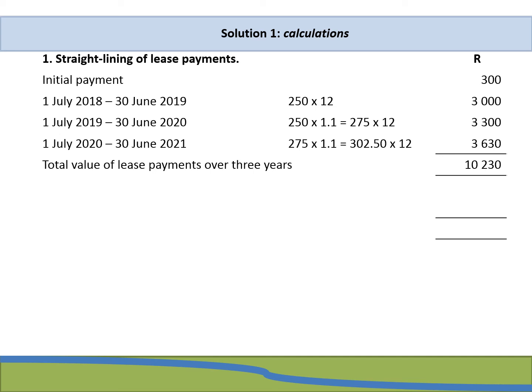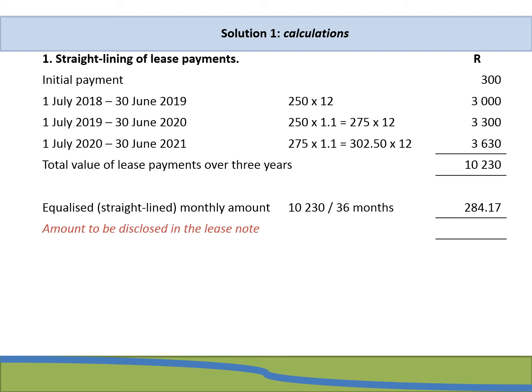We now need to straight-line that amount over the lease term. Dividing the total of 10,230 by 36 months gives a monthly straight-line amount of 284 Rand. We are not done yet, as we need to disclose this amount in the notes. The lease was entered into on 1 July 2018 and the financial year ended 31 December 2018, so we multiply by six months. However, the actual amount paid may not equal the equalized amount, resulting in either an overpayment or underpayment compared to the statement of profit or loss.